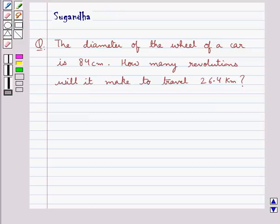Hello and welcome to the session. In this session we discuss the following question which says: The diameter of the wheel of a car is 84 cm. How many revolutions will it make to travel 26.4 km?